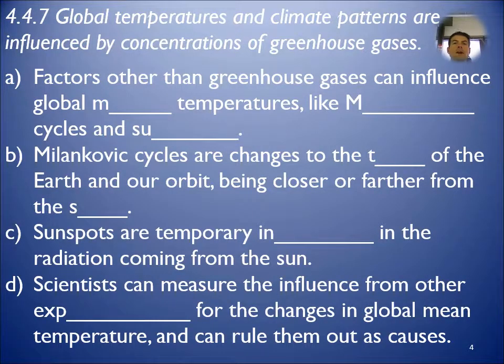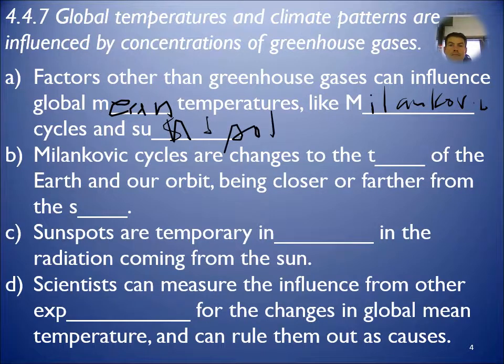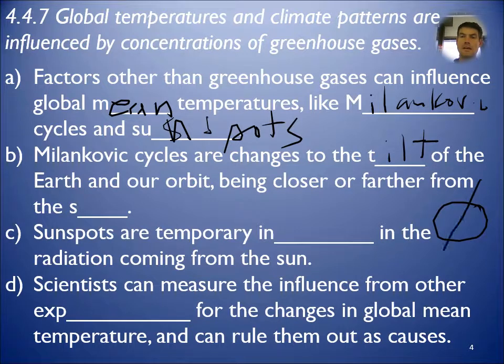So other factors, factors other than greenhouse gases affect global mean temperatures, which is average. And this is Milankovitch cycles and sunspots. So these cycles are the changes in the tilt of the Earth. So, as we said earlier, I think I mentioned before the seasons, right? Created by, this is the Earth, sun and tilt. Here's the sun.